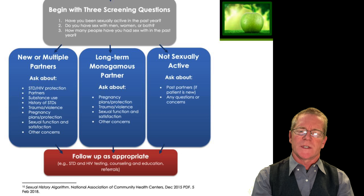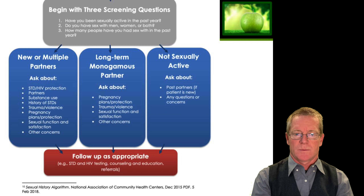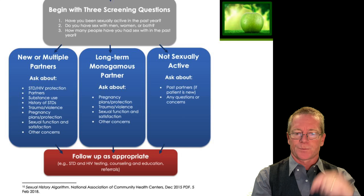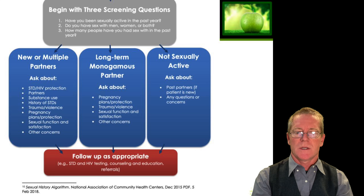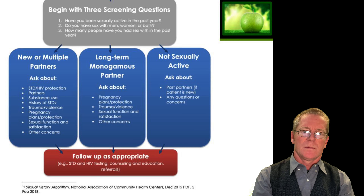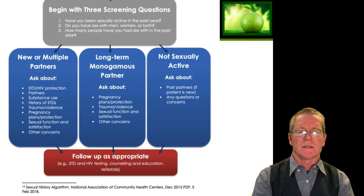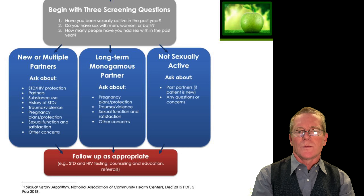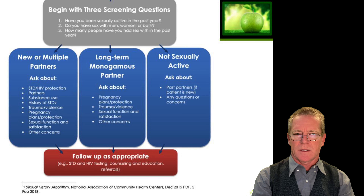Sexual function and satisfaction are other concerns. Long-term monogamous partners typically want to know about protection from pregnancy, whether there is trauma, violence, or abuse in the relationship, whether sexual function is satisfactory, and any other concerns about their long-term relationship. For people who are not sexually active, it's important to ask about past partners and any questions or concerns about not being sexually active — whether a person is happy not being active or has concerns.